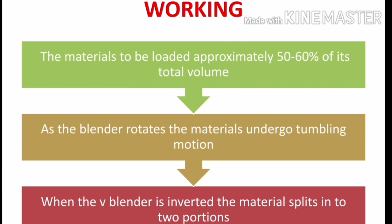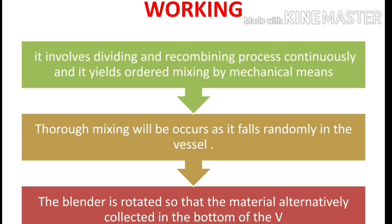Now let's see how the twin shell blender works. First, the materials to be mixed are introduced into the blender through either of the shell hatches. An optimum sample of about 50 to 60 percent of the total volume of the blender should be loaded. As the blender rotates, the material undergoes tumbling motion inside.